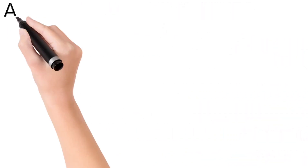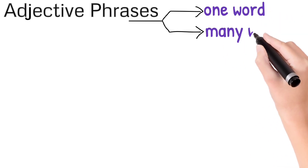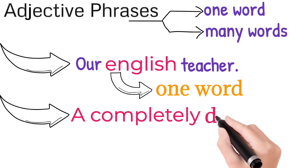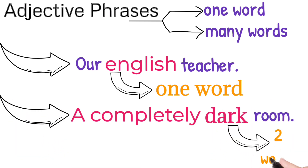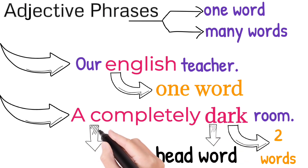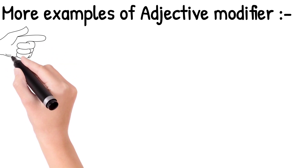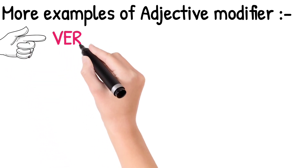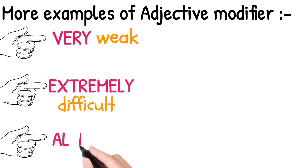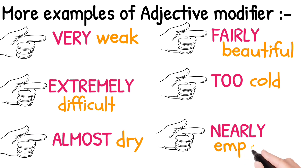First we have to know what is an adjective phrase. 'English' is a one-word adjective phrase. 'A completely dark room' is a two-word adjective phrase, because 'completely' and 'dark' are both like adjectives. 'Room' is the noun head word. 'Dark' is the head word and it is an adjective; 'completely' is the modifier. Some words modify adjectives — these are adjective modifiers. Examples: very weak, extremely difficult, almost dry, fairly beautiful, too cold, nearly empty. Here all the underlined words are adjective modifiers.